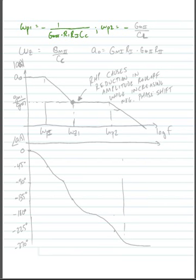Omega p2 is equal to minus gm2 divided by CL approximately, and of course this depends on the relative size of CL on the internal device capacitances, but this will be our approximation.